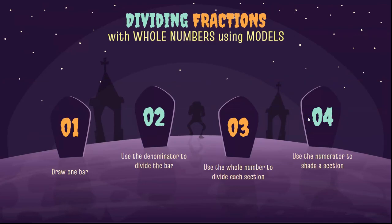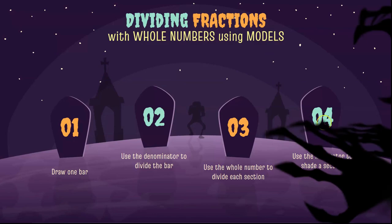So when the fraction comes first we're going to draw one bar. We're going to use the denominator to divide the bar. We're going to use the whole number to divide each section. And then we use the numerator to shade a section. And then we can figure out the fraction of the bar that is shaded.